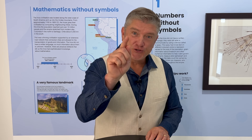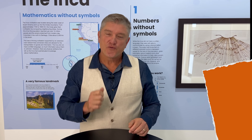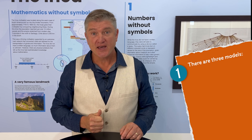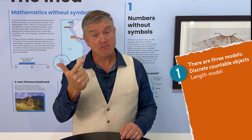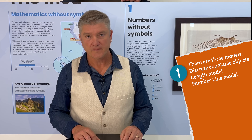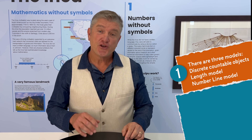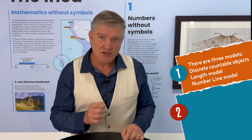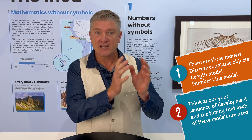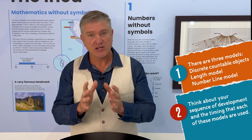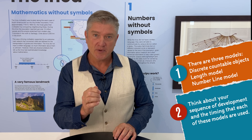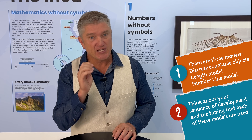Now this is what I want you to do. One: remember that there are three models for teaching number in elementary schools — the discrete countable objects, the length model involving number tracks or strips or bars, and the number line. And two: know that mathematics is a hierarchical discipline where what you teach today must build on what happened yesterday and ready students for the content of tomorrow. So think carefully about the sequence of development and the timing for which you introduce each of those models.